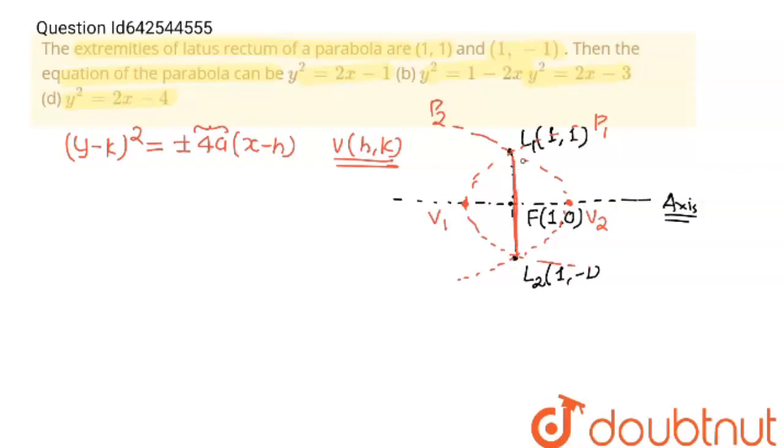And distance L1, L2 with the given points, we can see L1, L2 distance is 2. L1, L2 distance is equal to 2, which means that 4a is equal to 2. Now, I am going to find vertex. See, distance between focus and vertex is a. 4a is 2, it means that a is equal to 1/2.